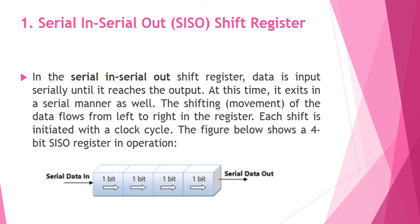Number one is Serial In and Serial Out — the SISO shift register. In this register, data is input serially until it reaches the output. You transfer the data in a serial manner and the output is also in serial manner. The movement of data flows from left to right in the register. Each shift is initiated with a clock cycle. This is a 4-bit SISO register, shown as a block diagram.